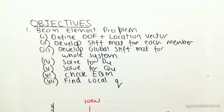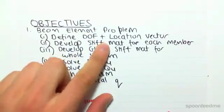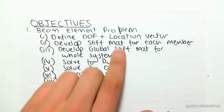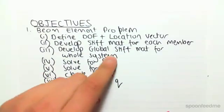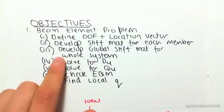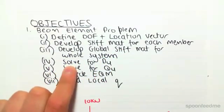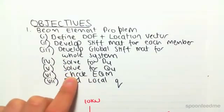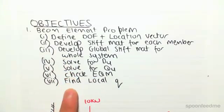So essentially, we're going to define the degrees of freedom and location vector. We're then going to develop a stiffness matrix for each member. We're then going to develop a stiffness matrix and equations for the whole system. We're then going to solve for the unknown displacements, then for the unknown forces. We're then going to check equilibrium and then we're going to find the local forces Q.